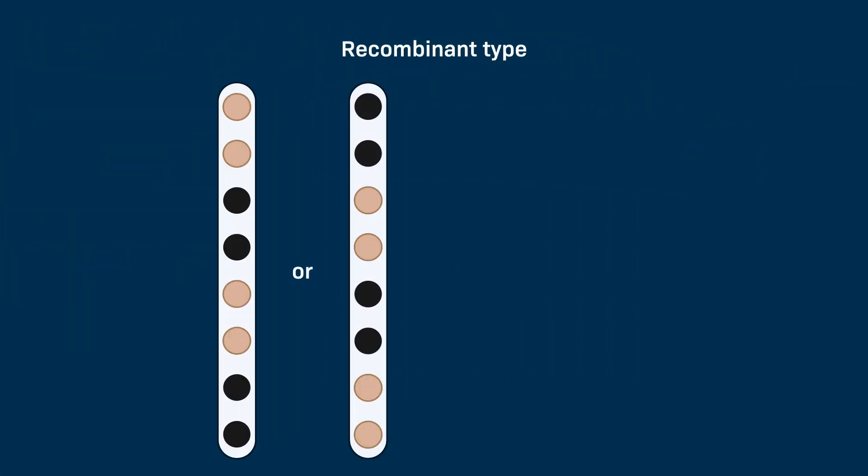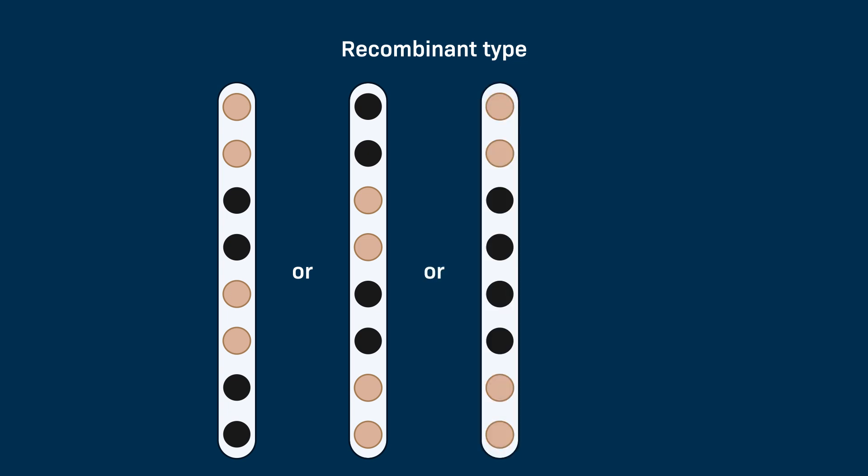What other recombinant type asci would you expect to see? We might see recombinant asci that are black, black, tan, tan, black, black, tan, tan, or tan, tan, black, black, black, black, tan, tan, or even black, black, tan, tan, tan, tan, black, black.